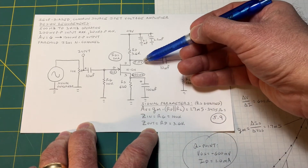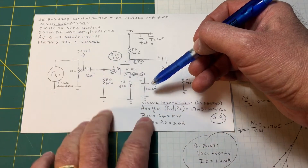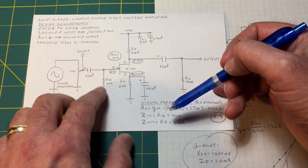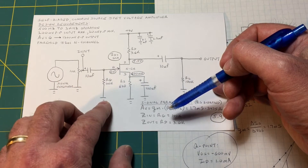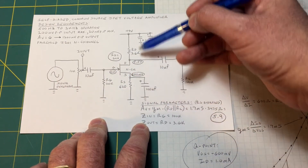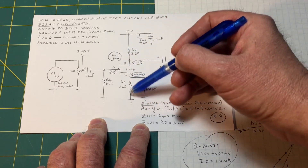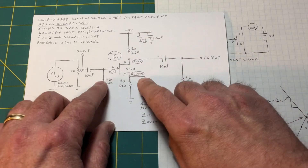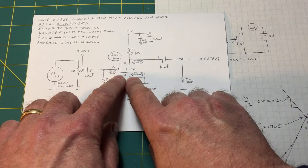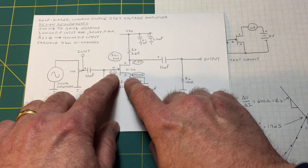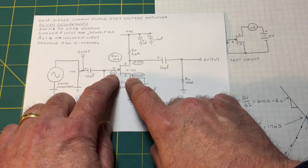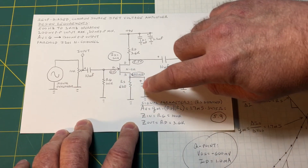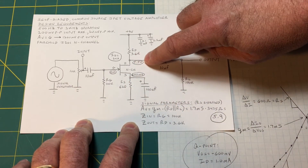These voltages are the Q point voltages with no signal coming in — what we would see on the source, drain, and gate. We see zero volts on the gate because the 100k ohm resistor holds it at zero. The Q point current flows through the source resistor, causing a 600 mV drop. So the gate is biased 600 mV negative with respect to the source, which is what we want in a JFET circuit — the gate-to-channel junction must be reverse biased. We'll also have 5.5 volts at the drain with no signal input.